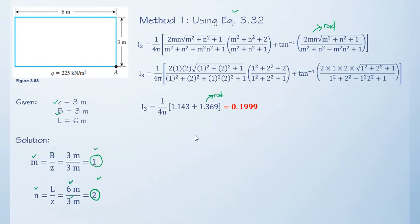We now substitute the value of I₃ to our equation, Δσz = q multiplied by I₃. And q is given to be 225 kilonewton per meter squared times 0.1999. The vertical stress increase at point A is 44.977 kilopascal.